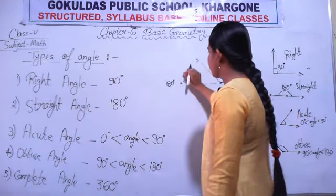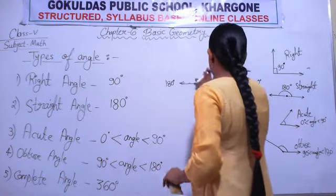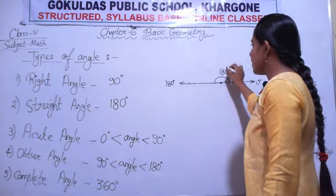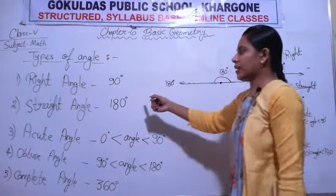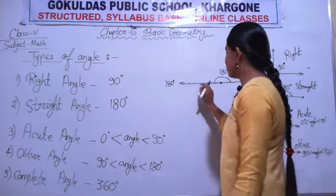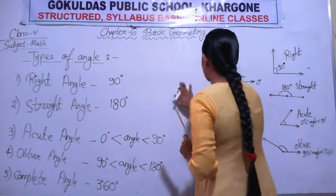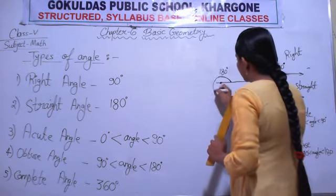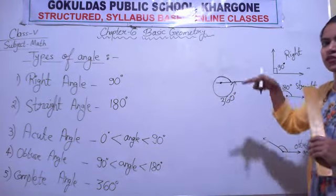Now if the arm continues to move all the way back to 0 degrees — completing one full round — that shows 360 degrees. One complete round shows 360 degrees, which is why we call it a complete angle. You can also observe: this semicircle shows 180 degrees, and the other half is also 180 degrees, so 180 plus 180 equals 360 degrees total.